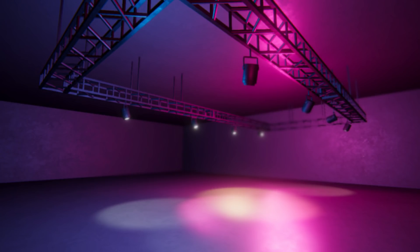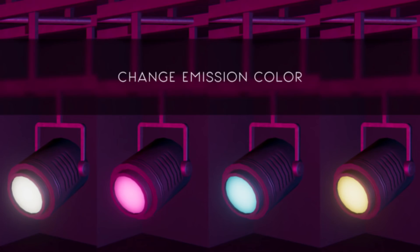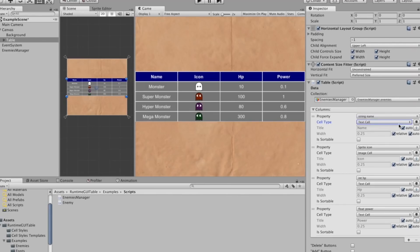Next one is Spotlight and Structures, a small set of objects designed originally to be part of a nightclub scene. It includes one spotlight, one structure, and one ceiling support.